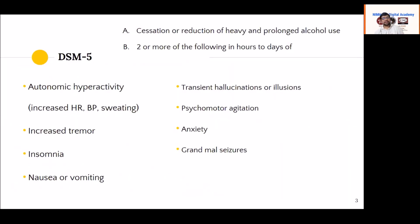DSM-5 lists out the symptoms of alcohol withdrawal. These include autonomic hyperactivity — increased heart rate, increased BP, diaphoresis or profuse sweating, and increased tremor. Fine tremor is seen initially; as the condition progresses it becomes coarse. There is also insomnia, nausea, vomiting, transient hallucinations or illusions, psychomotor agitation, significant anxiety, and finally seizures.